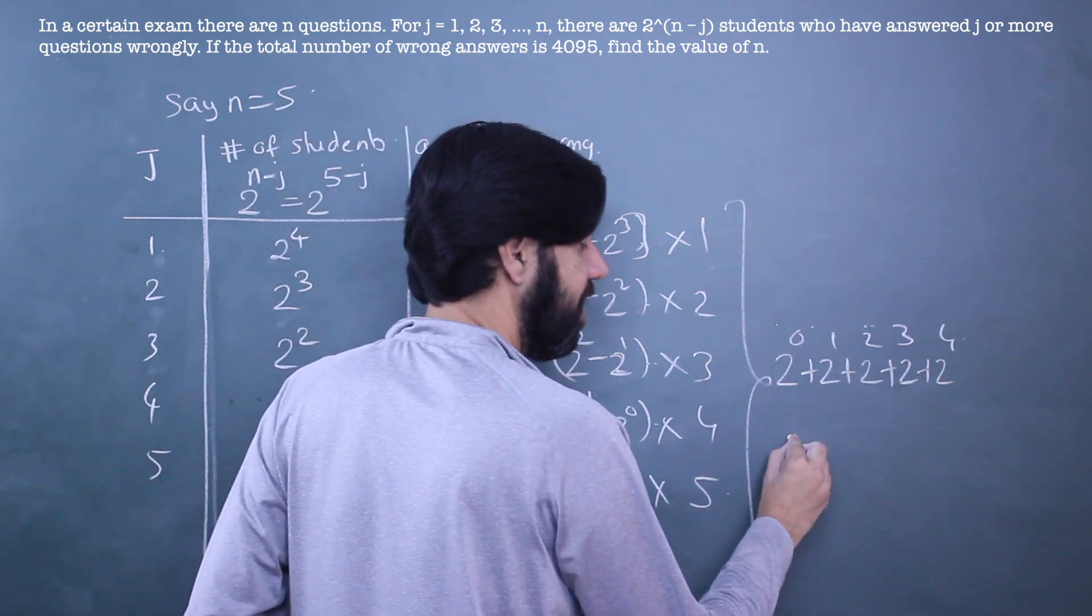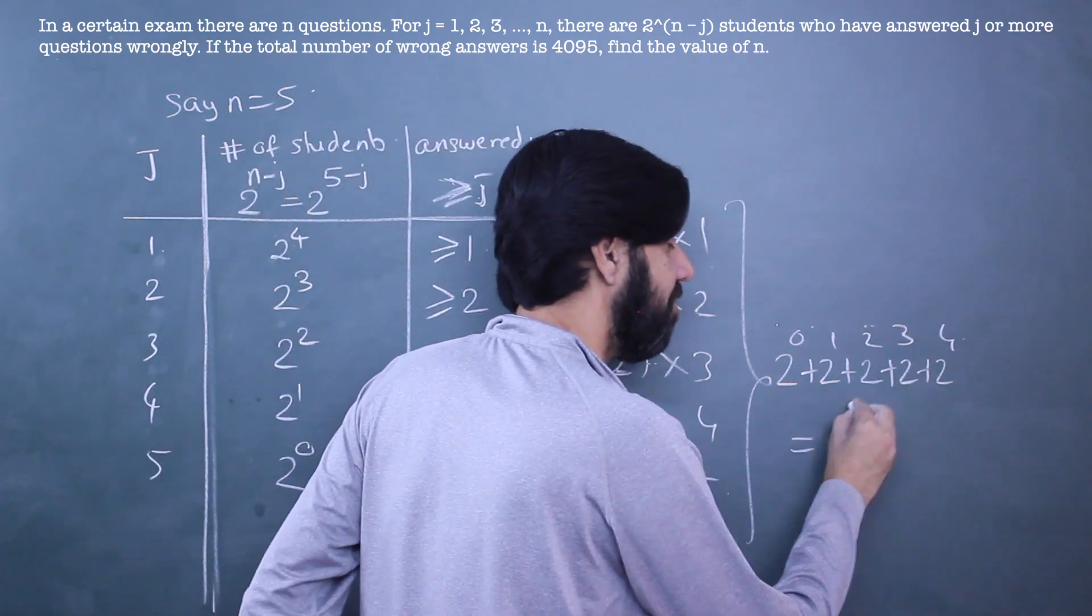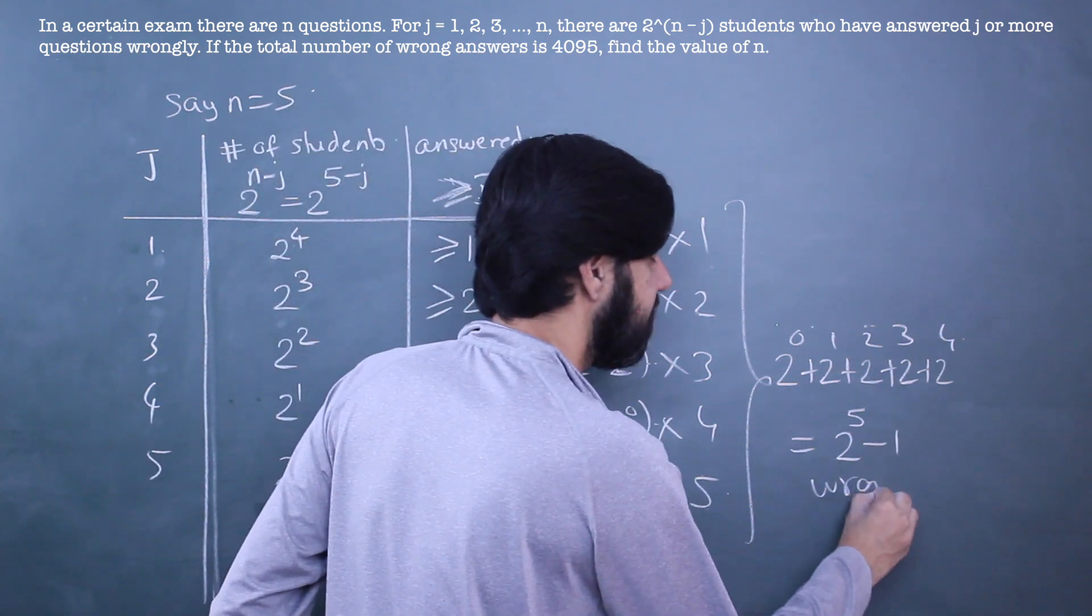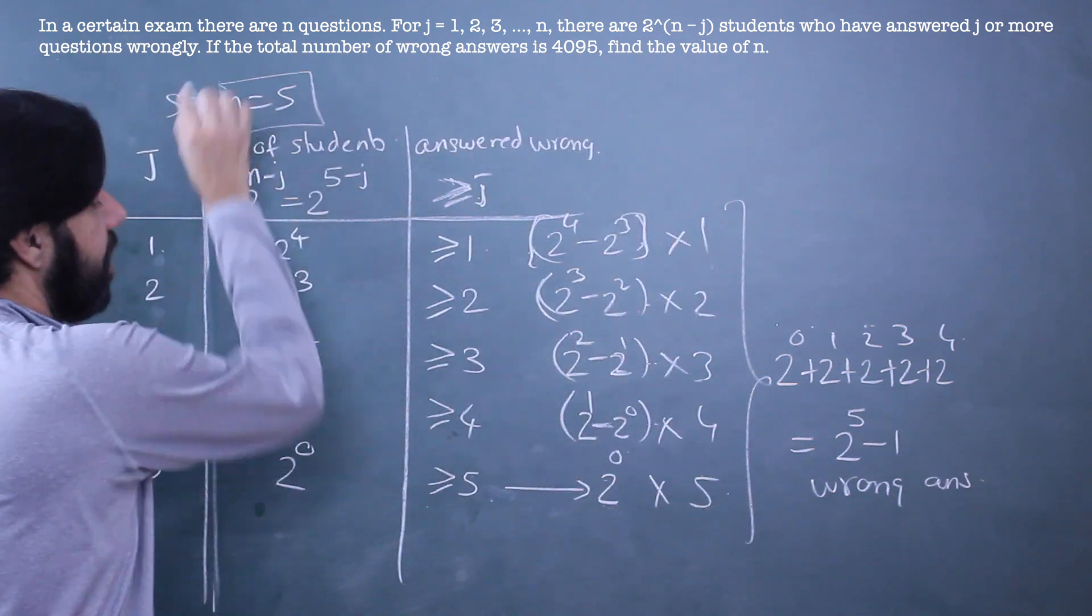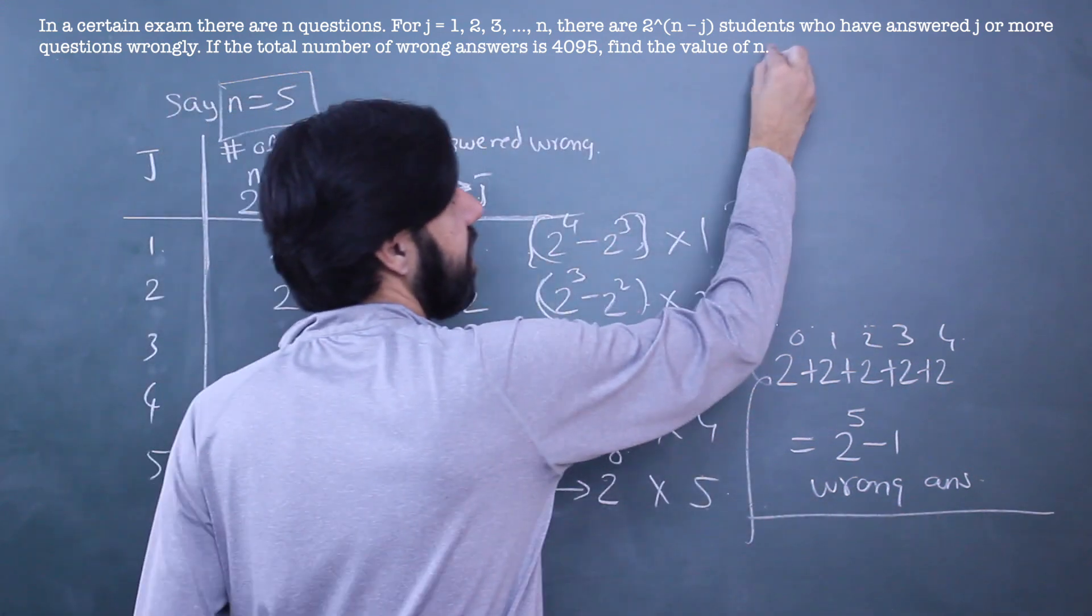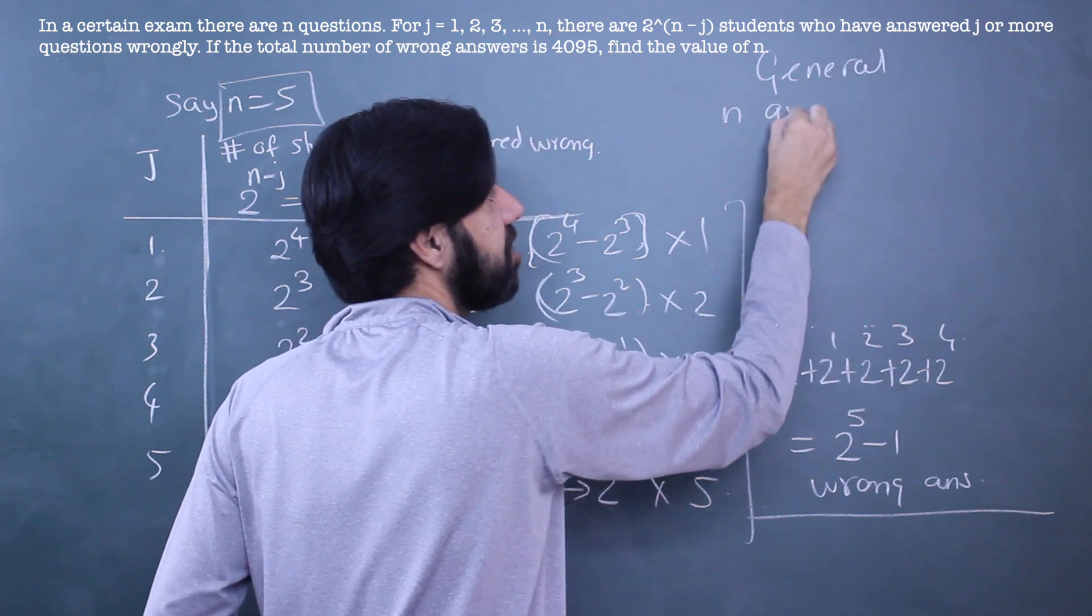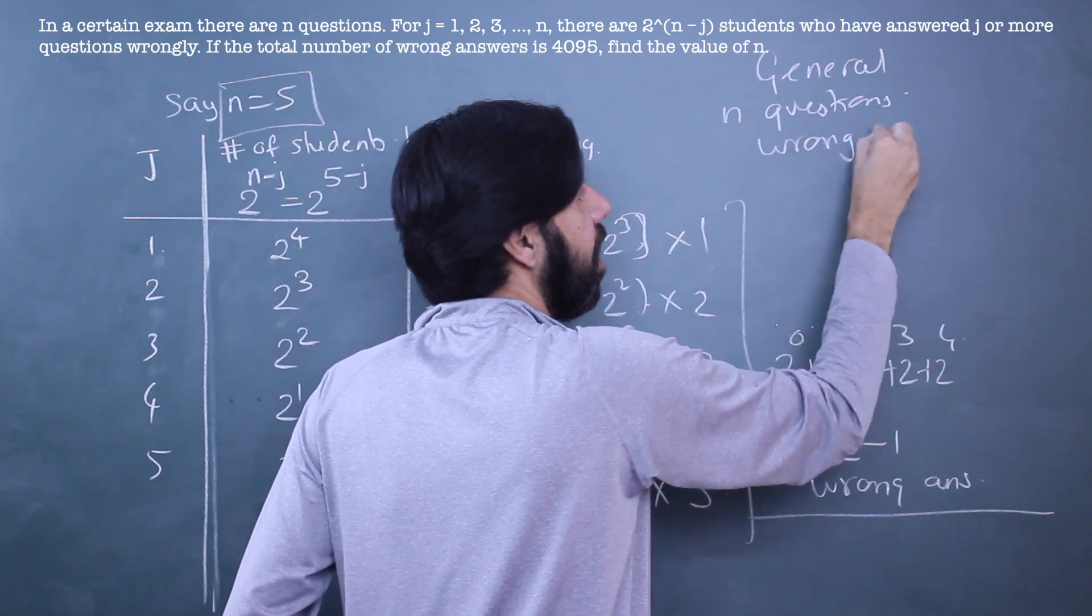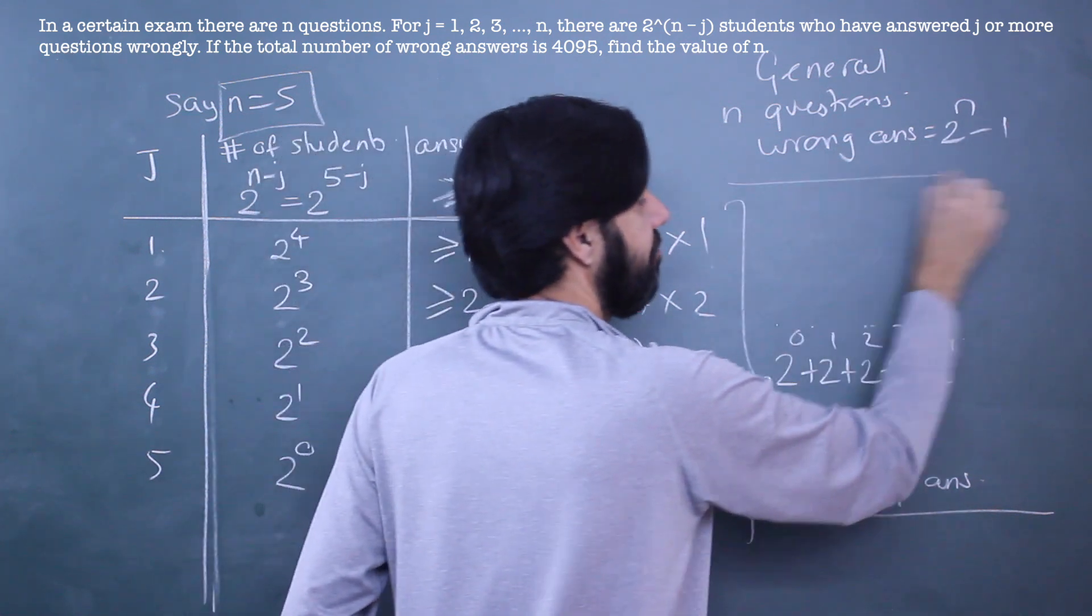And this total is a very simple geometric sum of sum of powers of 2, which is always going to be the next power of 2 minus 1. So these many wrong answers we have. When n was 5, the number of wrong answers is 2^5 - 1. So we can generalize this. For n questions, the total number of wrong answers will be 2^n - 1.